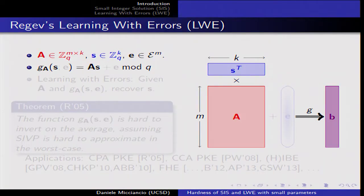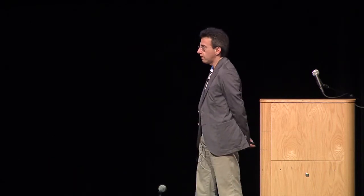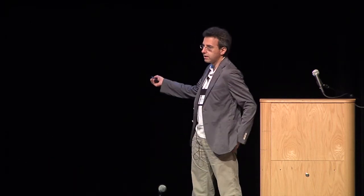An equally popular — even more popular — function based on lattices, proposed by Regev, is the learning with errors function, which is similarly defined. It uses a matrix A chosen at random modulo q, but this time it is a matrix with full column rank. As defined this way, the function would be easy to invert using linear algebra.